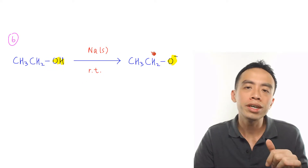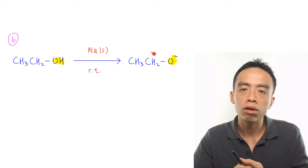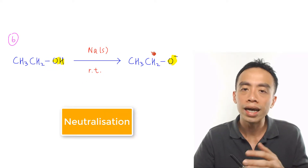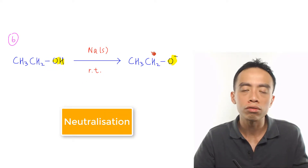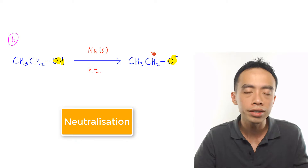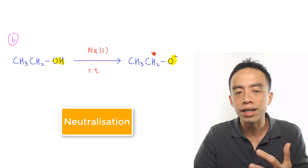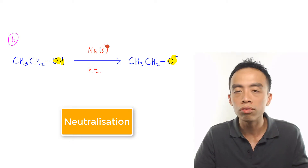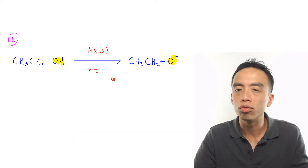Major reaction number 6 of alcohols is the acid-base reaction to form alkoxides. This is done using sodium metal at room temperature.